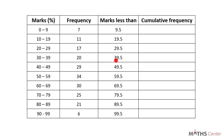So we have 39.5, 49.5, 59.5, 69.5, 79.5, 89.5, and 99.5 as the upper class boundaries for the remaining classes.